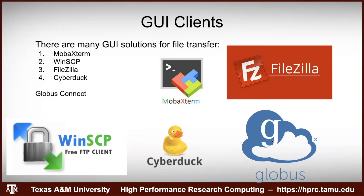MobaXterm has SFTP functionality built in. CyberDuck is a great alternative to FileZilla, available on Mac, Linux, and Windows. Globus is a solution HPRC pays for — it has endpoints on Terra and Grace, specifically the DTNs and FTN. WinSCP is a free SCP client for Windows that you can easily download.